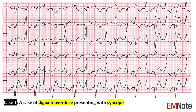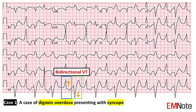Case 1: The patient has digoxin overdose and presents with syncope. The ECG shows bidirectional ventricular tachycardia. Bidirectional VT is a rare ventricular dysrhythmia characterized by a beat-to-beat alternation of the frontal QRS axis. It is most commonly associated with severe digoxin toxicity.